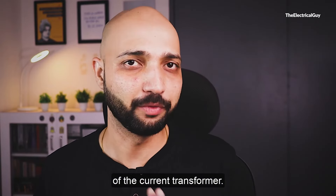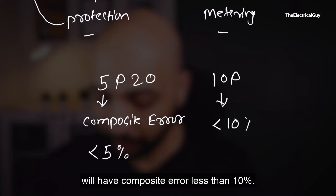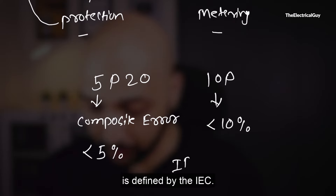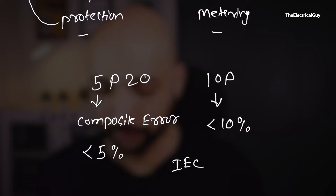The first number, 5, indicates the composite error allowed. So 5 basically indicates that this particular current transformer has a composite error of less than 5%. Similarly, you will also find it mentioned as 10P — in that case, 10 indicates that this particular core will have a composite error of less than 10%. These values are defined by the IEC standard IEC 61869-2.